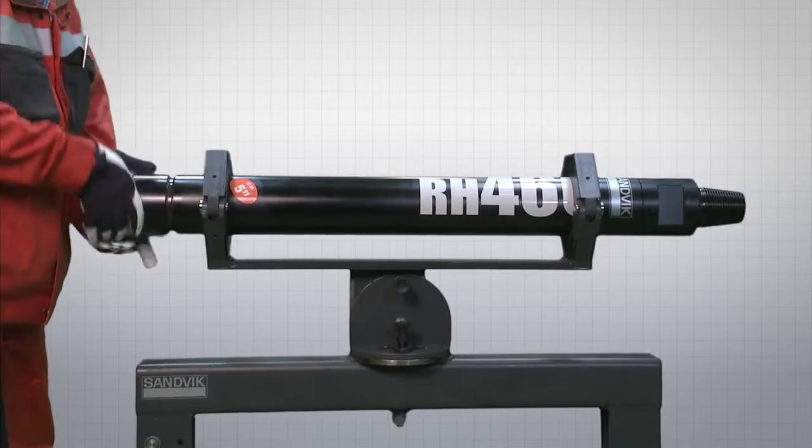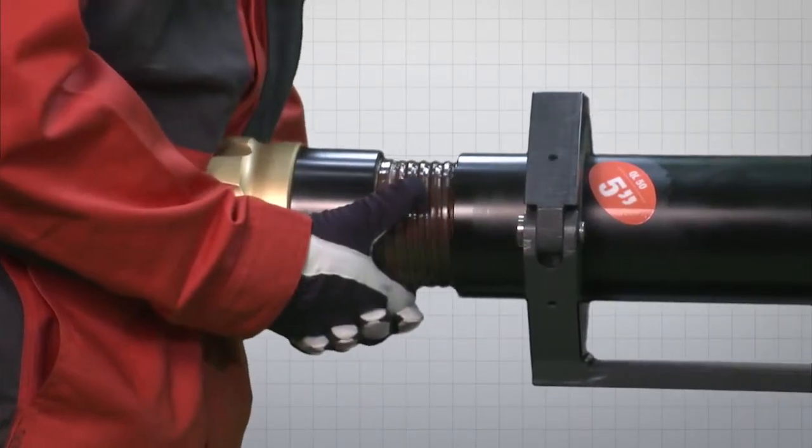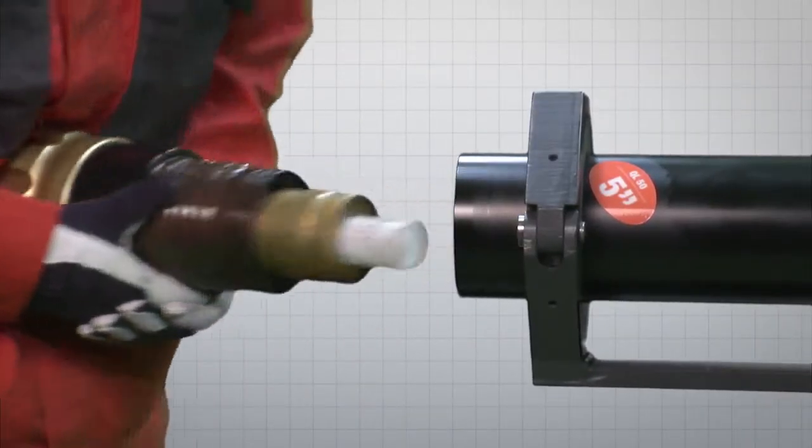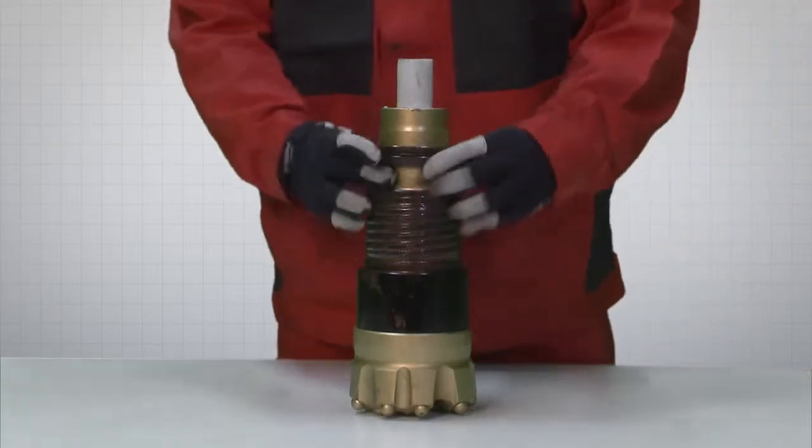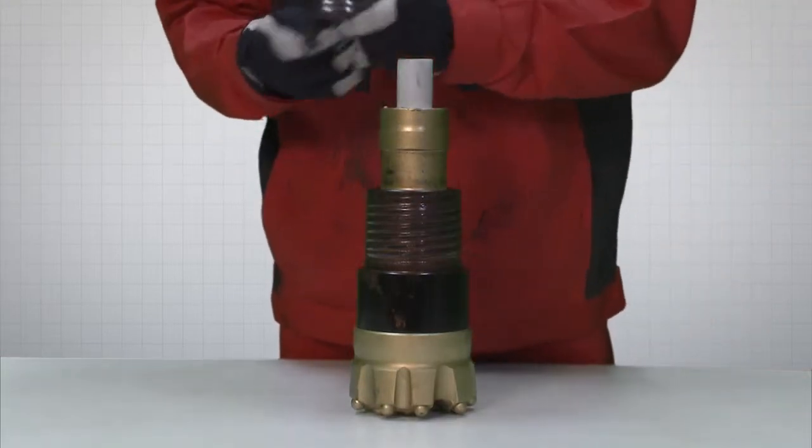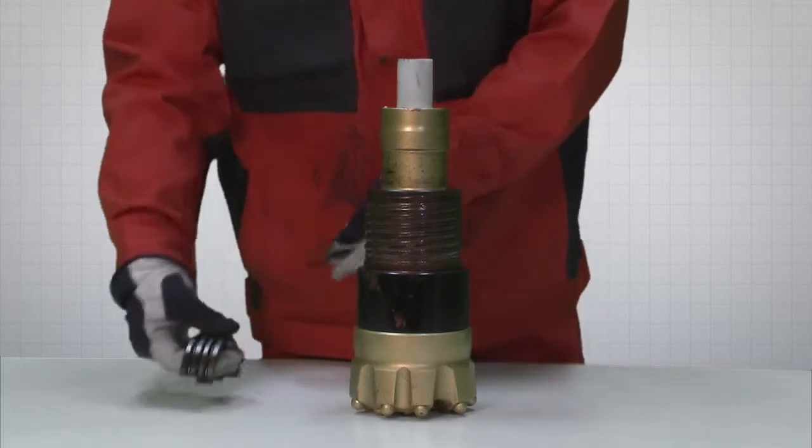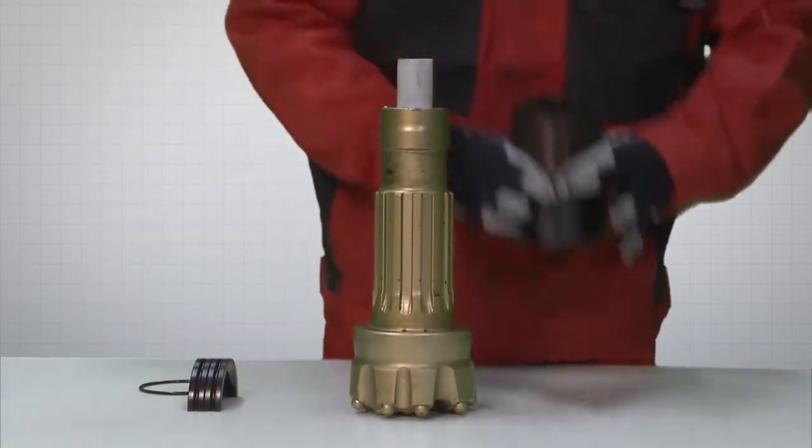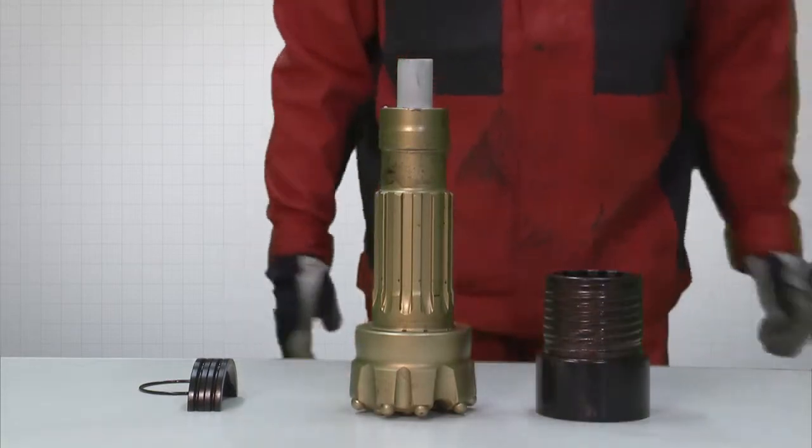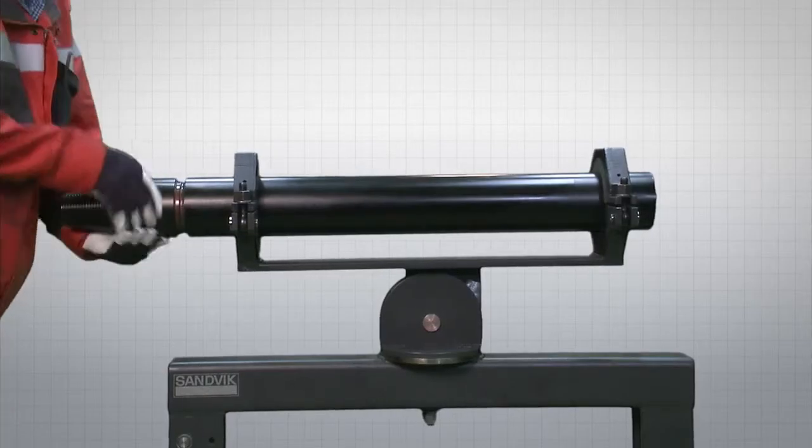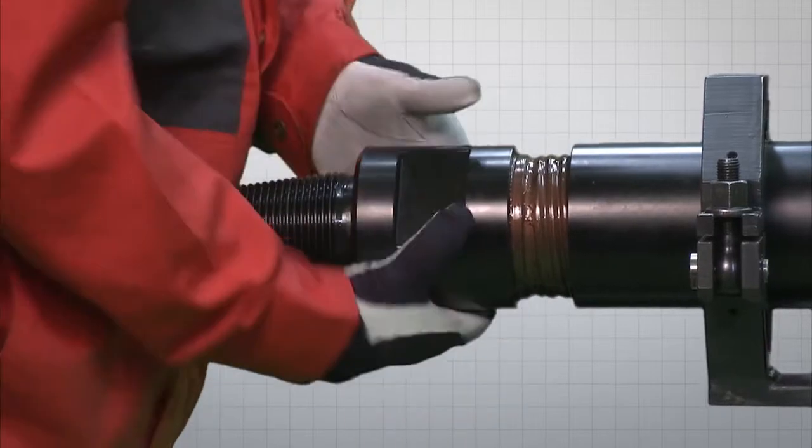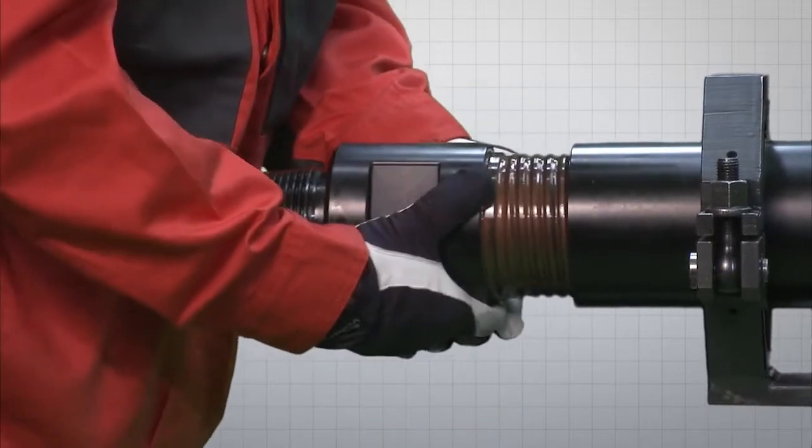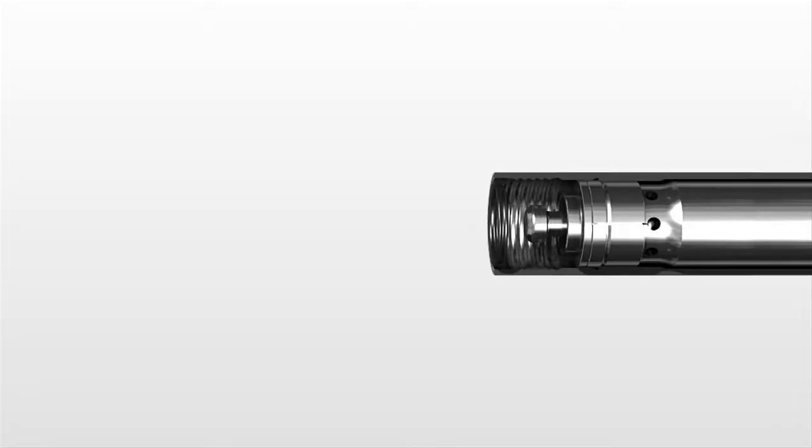Start by unscrewing the driver sub and bit. Remove the O-ring that holds together the two halves of the bit retainer ring. Put it in a safe place. Remove the driver sub from the bit. Remove the top sub in the same way as the driver sub. Remove the make-up ring and the check valve dart.